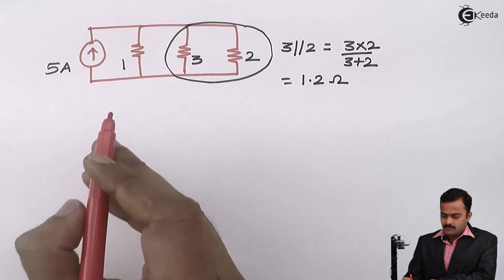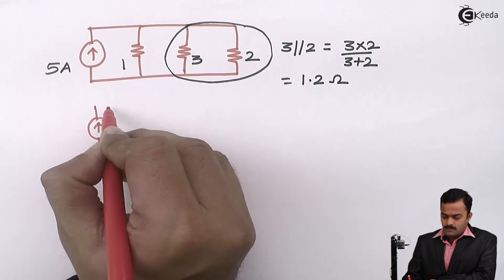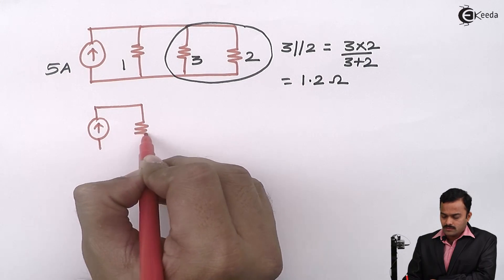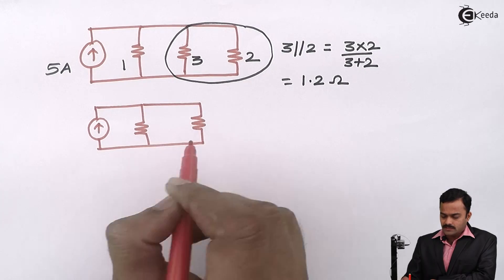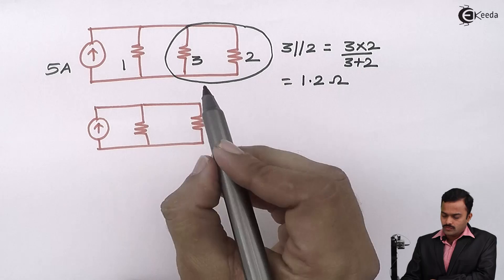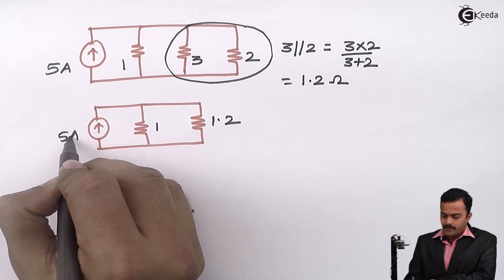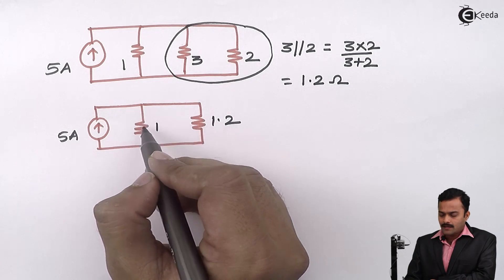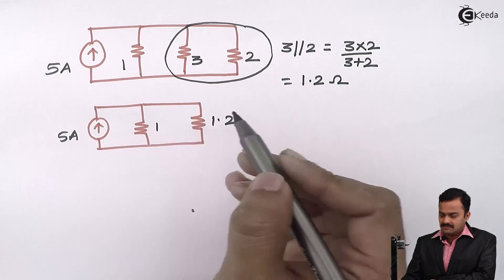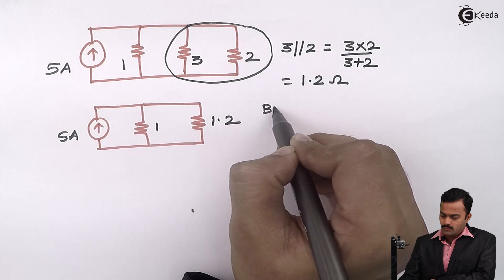What is so special about it? Let us redraw. Now I am having a current source, 1 ohm resistance and parallel combination resistance, which is 1.2. So it is 1.2, 1 and 5 ampere. Current source is connected to parallel to 2 resistances. So it is a favorable condition for application of current divider rule.